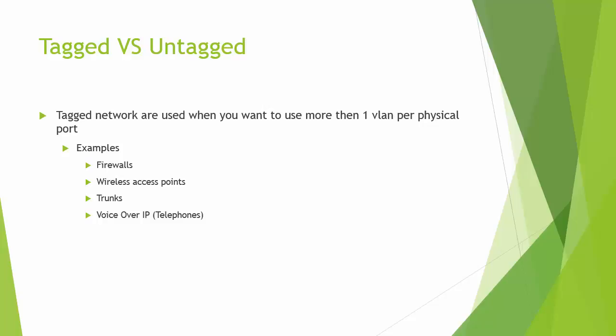You have to do configuration on the access point and on the port in the switch. The opposite is an untagged VLAN, where you only do configuration on the switch itself. The device plugged into the switch — a computer, phone, or printer — does not need to be VLAN aware.